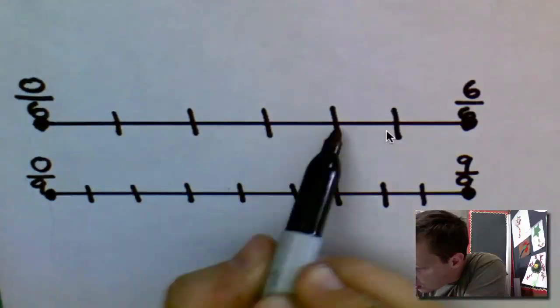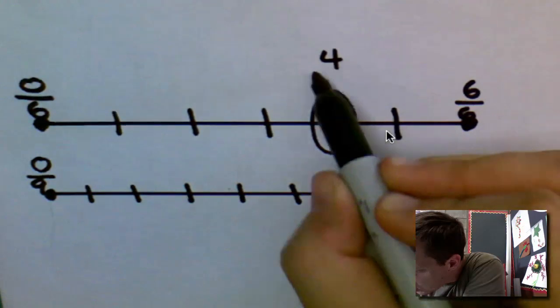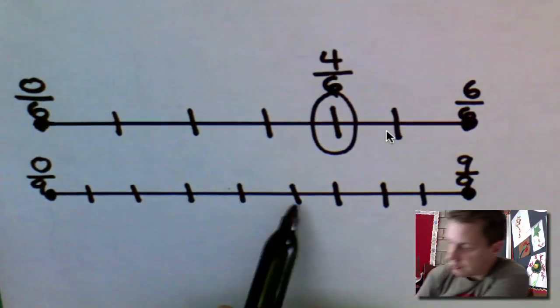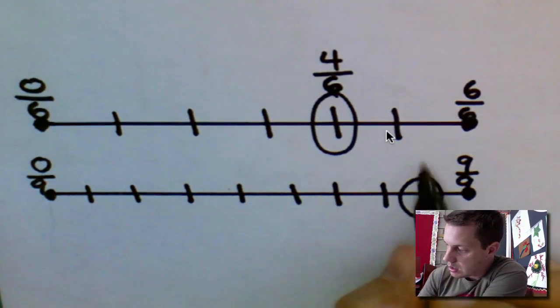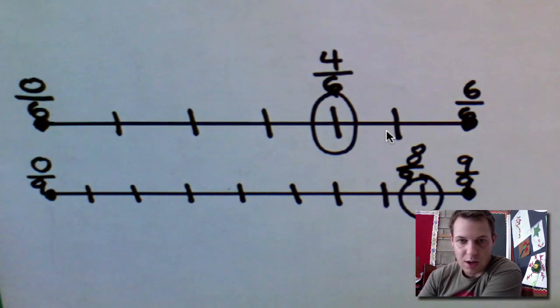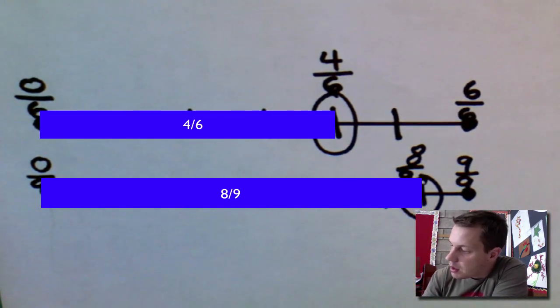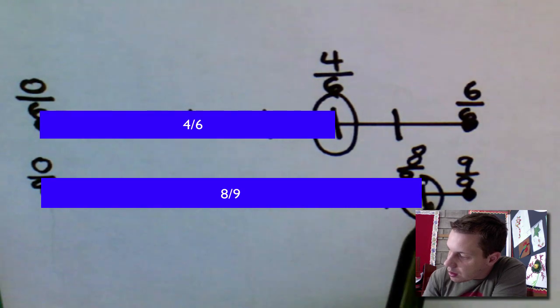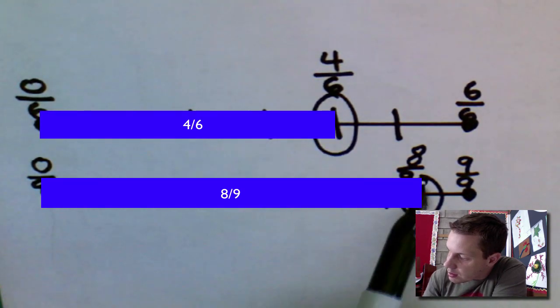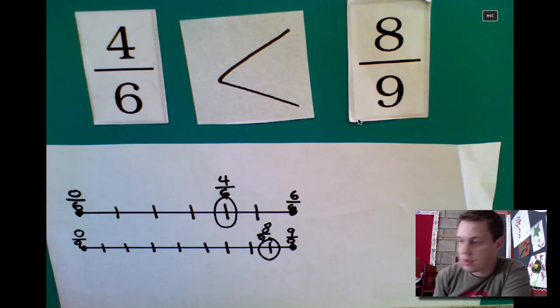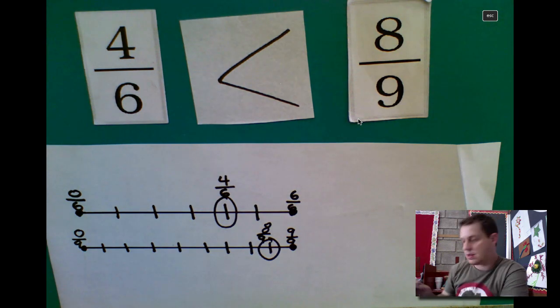Now, what are we comparing? We're comparing 4/6. So we go 1, 2, 3, 4/6 right there. This is 4/6. And we're comparing 8/9: 1, 2, 3, 4, 5, 6, 7, 8/9. We can see right away, looking at our two number lines, the 8/9 is a little bit more. So for that reason, we can say 4/6 is less than 8/9.